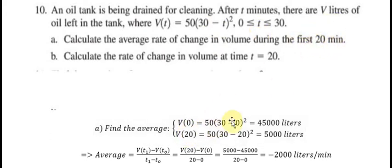We put zero in t, 20 in t, and we calculate 45,000 and 5,000 here. Then we apply the average. The average is equal to V(t1) minus V(t0) divided by t1 minus t0.